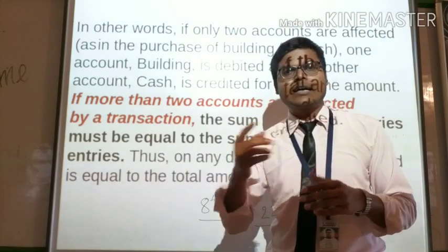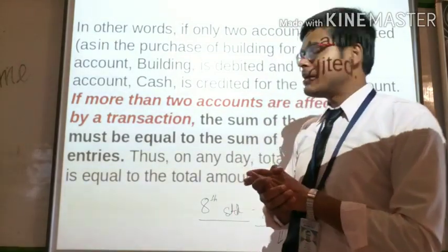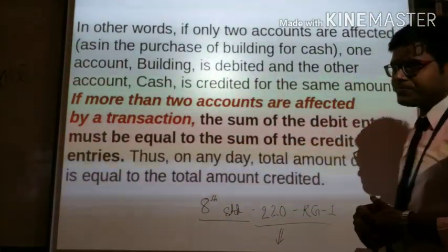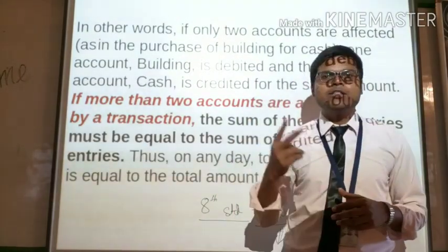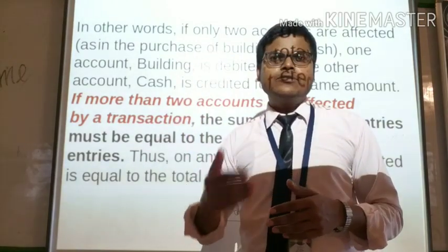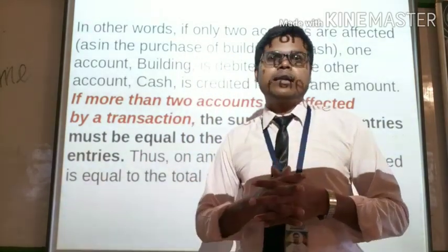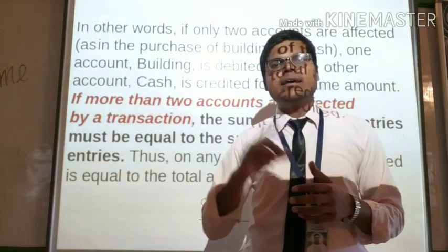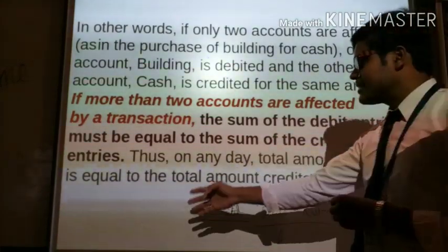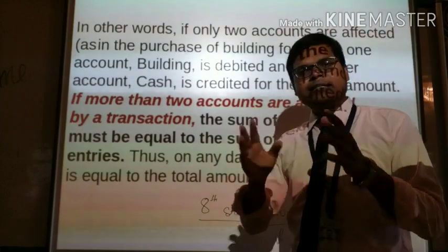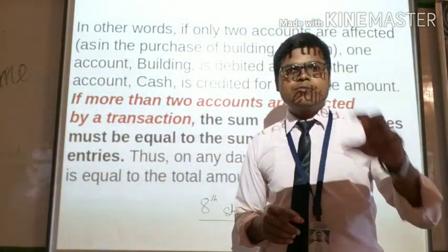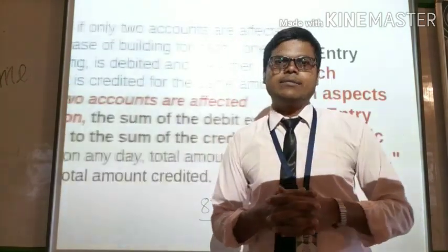If more than two accounts are affected by a transaction, the sum of the debit entries must be equal to the sum of the credit entries. So at the end of the day, we can define the double entry system.